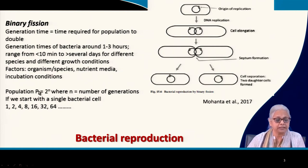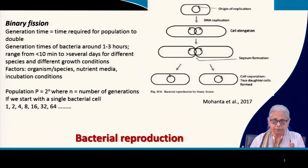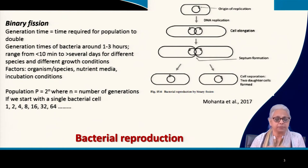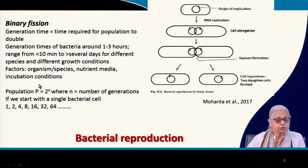If we want to put it in mathematical form: population P (different textbooks use N or X for biomass) equals 2 to the power N, where N is the number of generations.